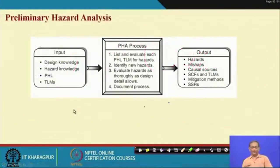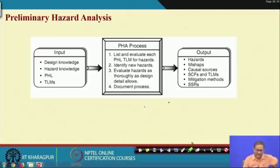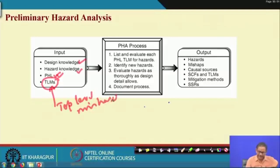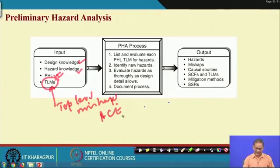In PHL, the process diagram includes design knowledge, hazard knowledge, and lessons learned. In PHA, the inputs are design knowledge, hazard knowledge, PHL, and top-level mishaps. For the missile system example, one top-level mishap is missile structure crash.